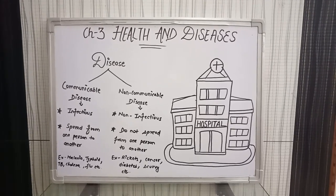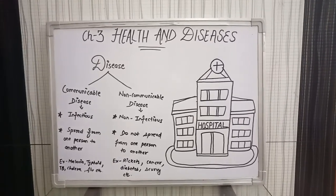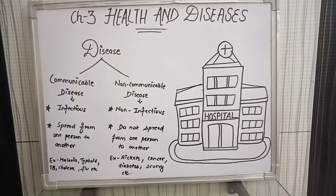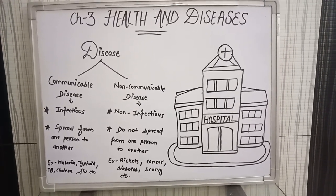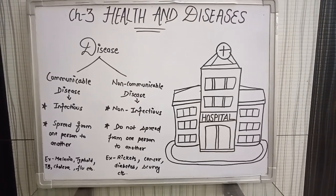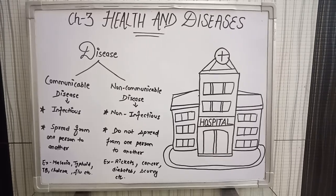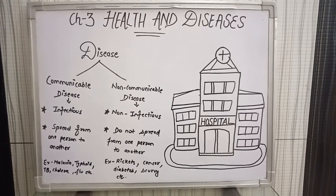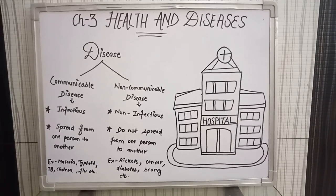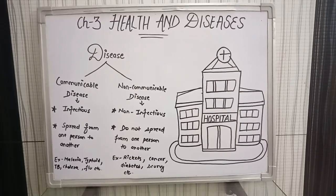Today we are going to learn all about disease and types of it. We are going to discuss two types of disease: communicable disease and non-communicable disease. In my next video I'll be back with a more detailed version of both, so this introduction is to help you understand and correlate easily while studying types of disease.